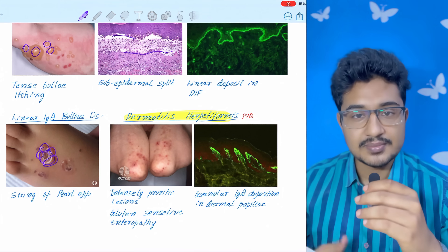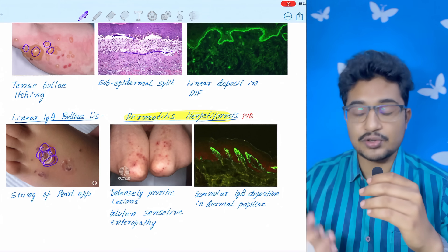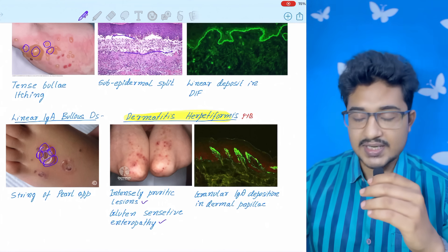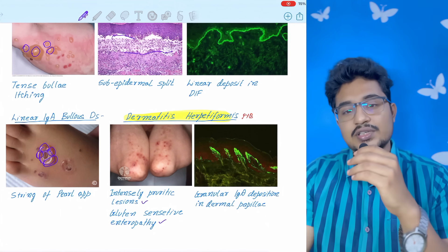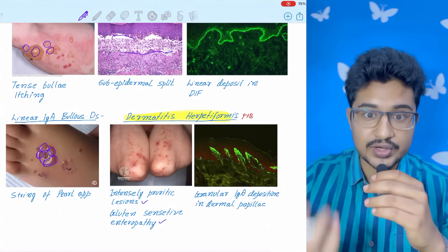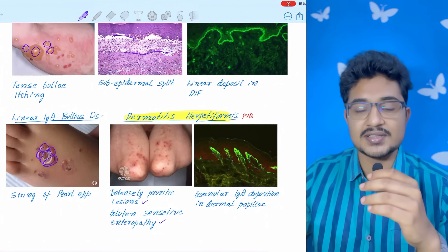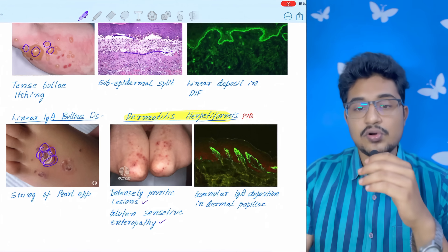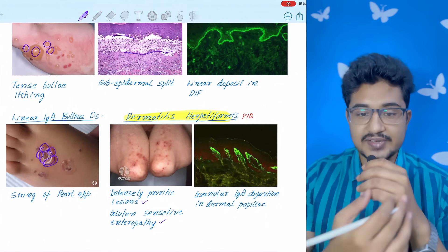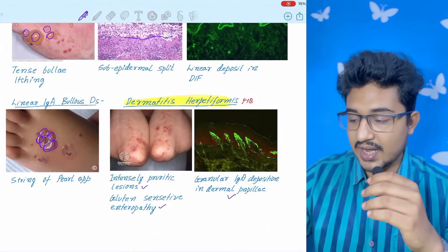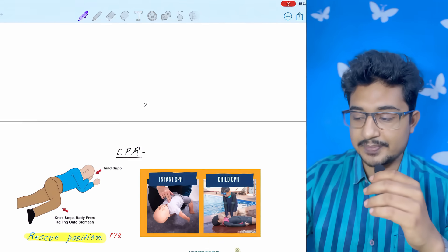Dermatitis herpetiformis. Here maybe you won't get any blisters because the history will be of intense pruritus. If there is so much itching, then the blister will break. So that is the point, that you might not get any blisters. These are seen in the elbows, knees, and fingers. And on DIF you get granular IgA deposition in the dermal papillae.